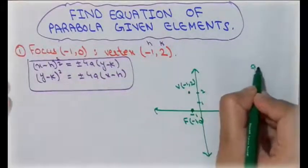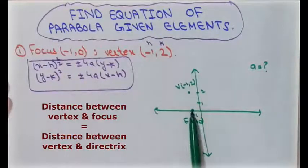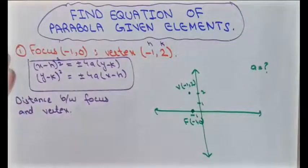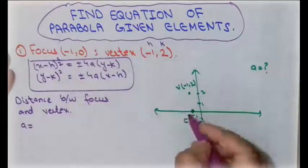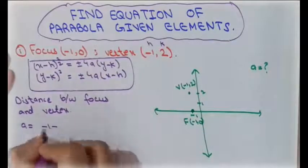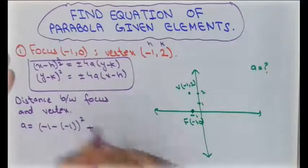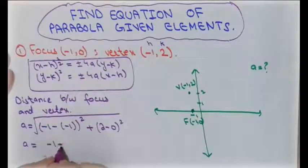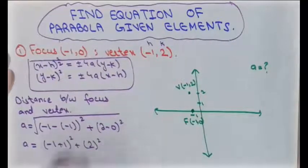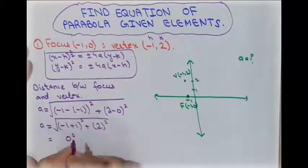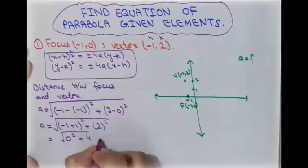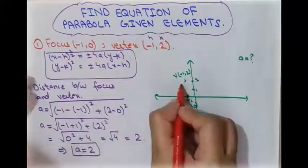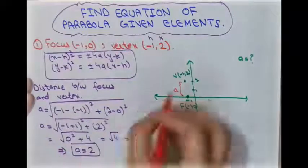Now we find the value of 'a'. The distance between the focus and the vertex equals the distance between the vertex and the directrix. Applying the distance formula: sqrt[(-1 - (-1))² + (2 - 0)²] = sqrt[0 + 4] = 2. So the value of a is 2.